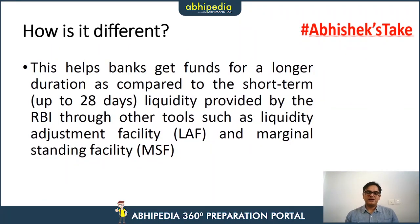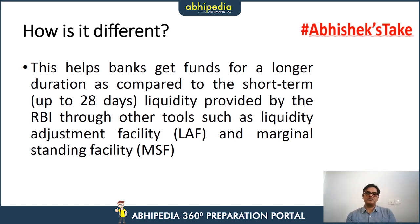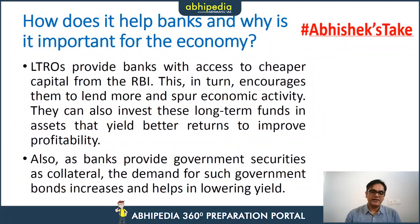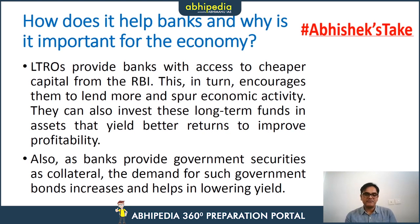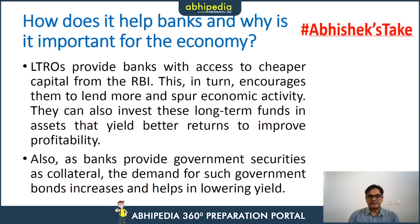How is TLTRO different from prevailing RBI facilities? LAF and MSF are both short-term, within which repo and reverse repo rates operate. In TLTRO, a long-term perspective of more than one year is taken into account. LTRO provides cheaper capital to banks from the RBI so that banks can lend this cheaper capital to businesses in urgent need. For collateral, instead of 91-day to 364-day treasury bills used in regular repo, TLTRO uses government securities ranging from one to three years. The rest of the mechanism largely stays the same.